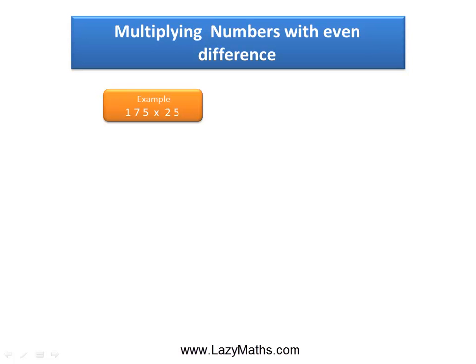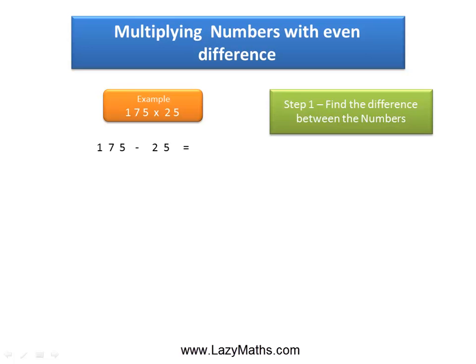Here's an example of multiplying numbers with even difference: 175 times 25. The first step is to find the difference between 175 and 25. The difference between 175 and 25 equals 150.